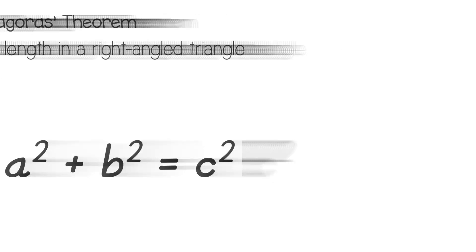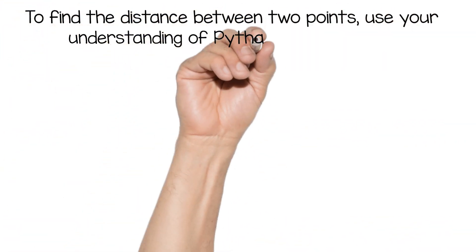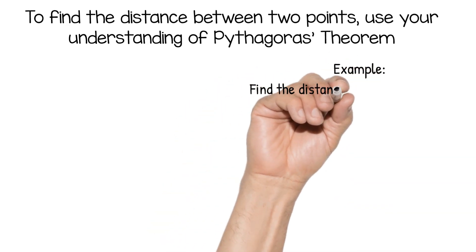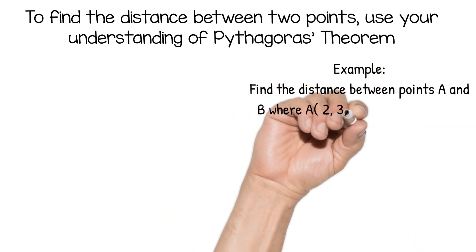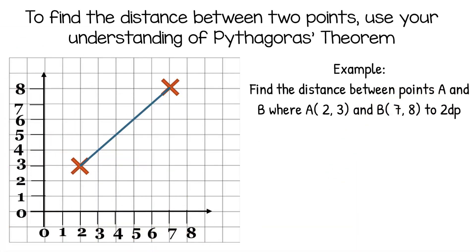To apply this to finding the distance between two points, you do use the Pythagoras theorem. So here is an example: find the distance between points A and B where A is (2, 3) and B is (7, 8). Sometimes you can draw a visual and that really helps. Here's my visualization of this - it doesn't have to be particularly accurate if you're in an exam situation. And then try to tuck in a triangle. Now you'll notice you've tucked in a right-angled triangle.